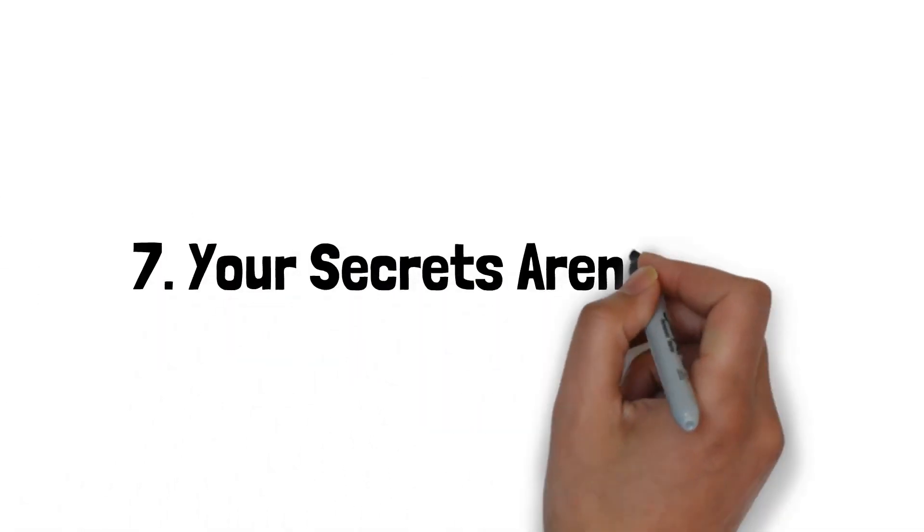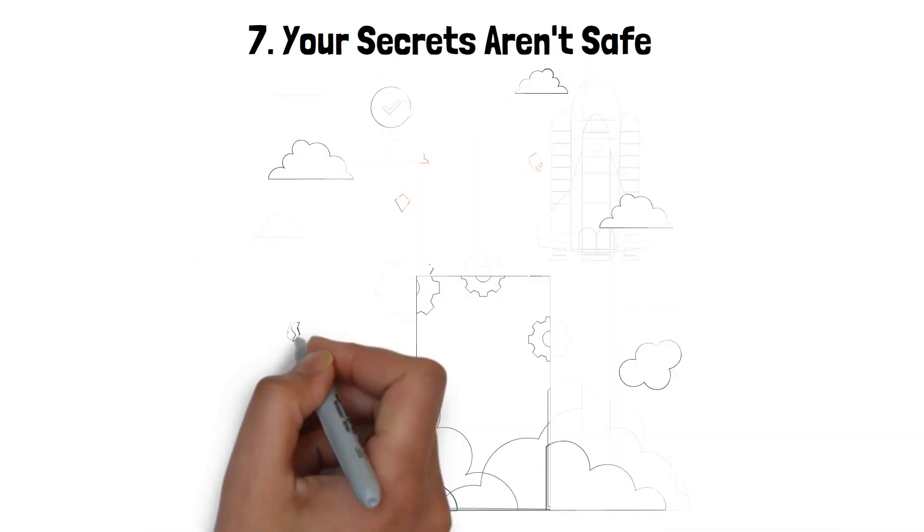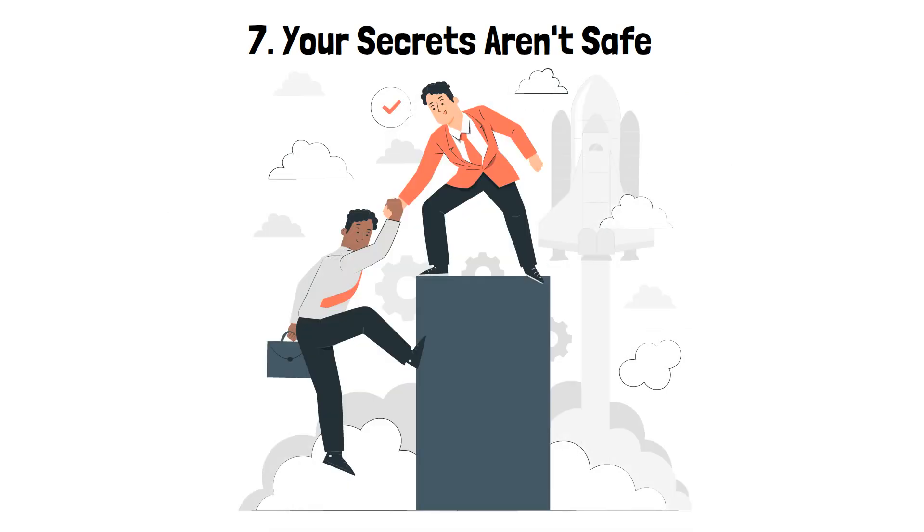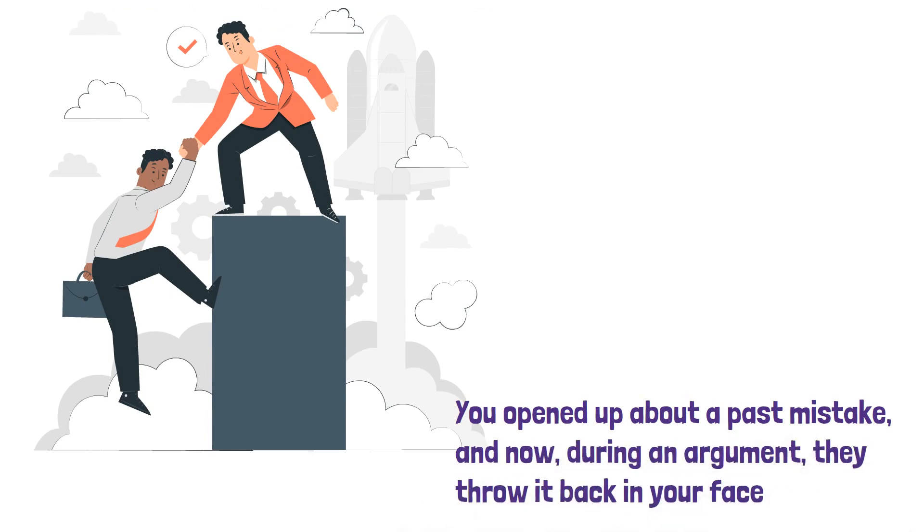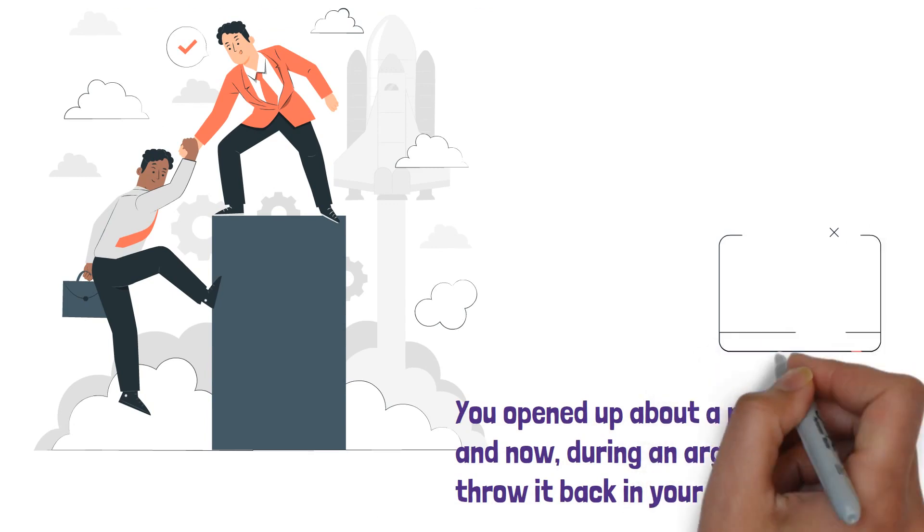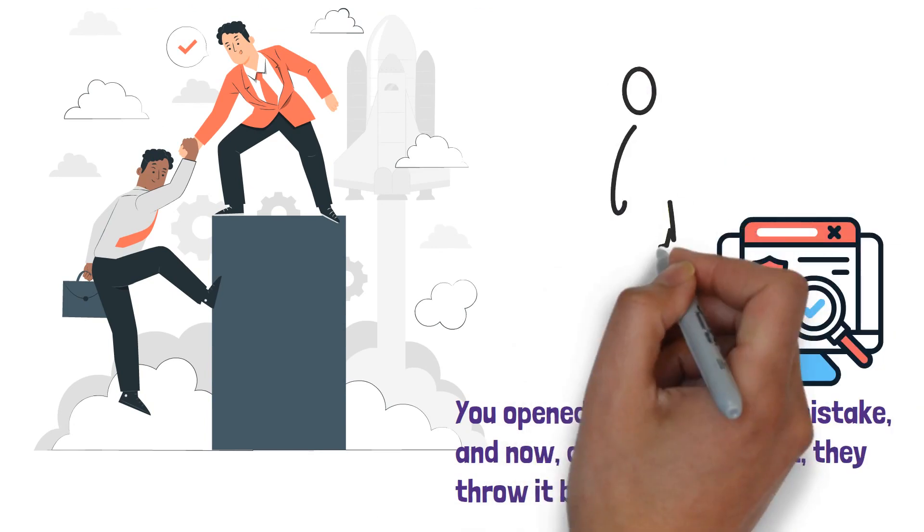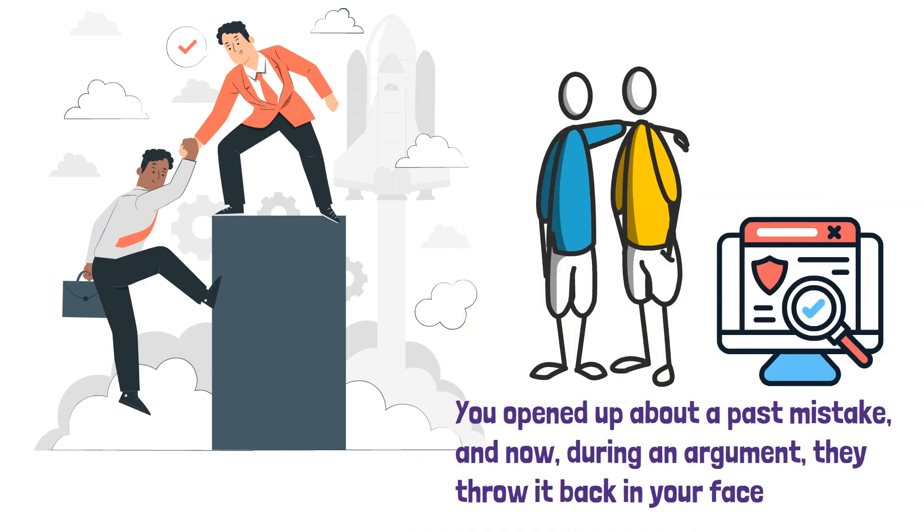7. Your secrets aren't safe. Trust is the foundation of any bond, but a manipulator uses your secrets against you. You opened up about a past mistake, and now, during an argument, they throw it back in your face. They weaponize your vulnerabilities, ensuring you're always on the defensive. It's a tactic to gain the upper hand. Remember, a genuine friend or partner never uses your past against you.